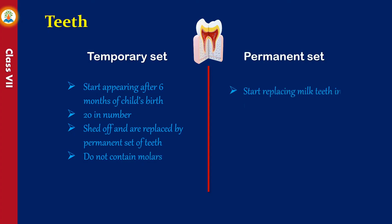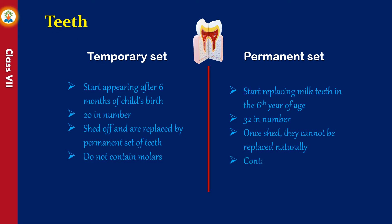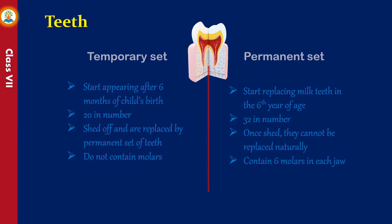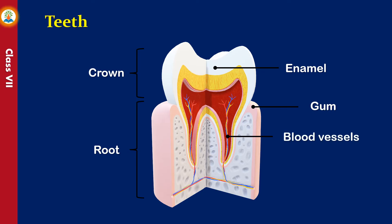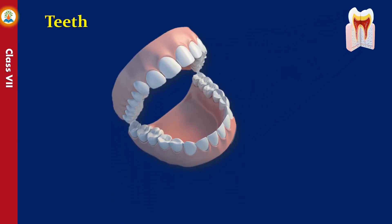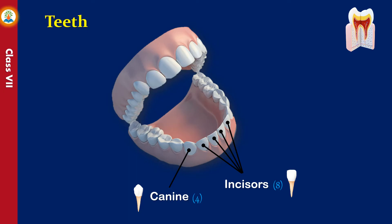The permanent set starts replacing milk teeth in the sixth year of age; they are 32 in number. Once shed, they cannot be replaced naturally. They contain six molars in each jaw. The visible part of the tooth above the gums is called the crown, and the root is the part below the gum line. The outer part of the teeth is called enamel and is the hardest substance found in our body. For tearing, cutting, and chewing food, there are four types of teeth. The four front teeth in both upper and lower jaws are called incisors, whose primary function is to cut food. Canines — there are four canines — are behind the lateral incisors; their main function is to tear food.